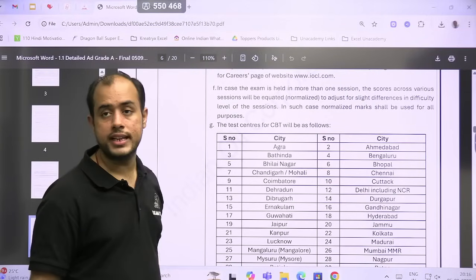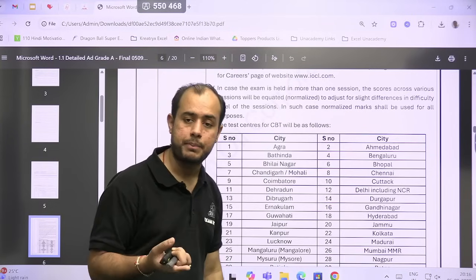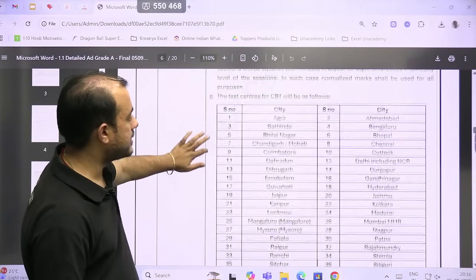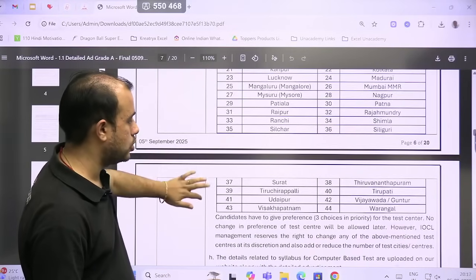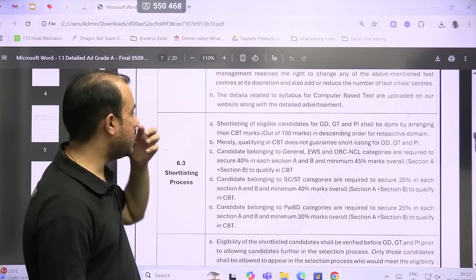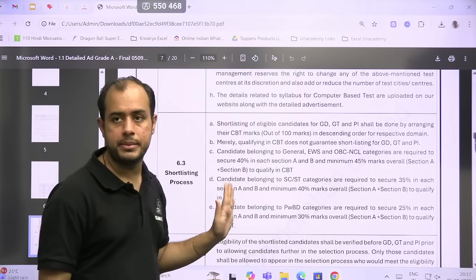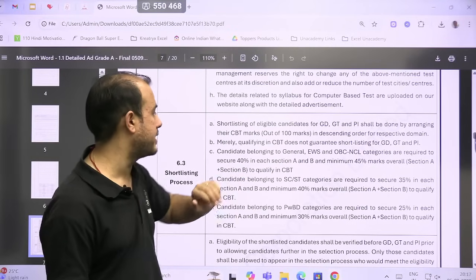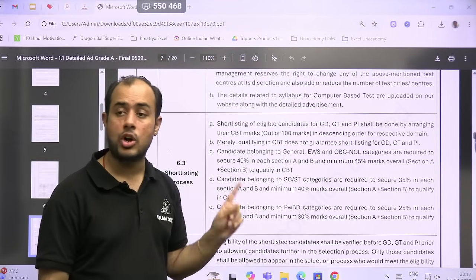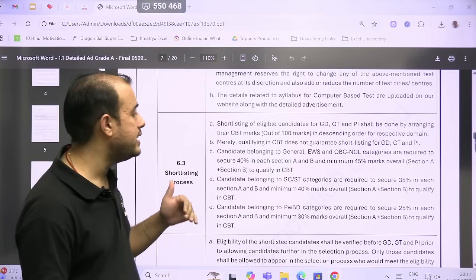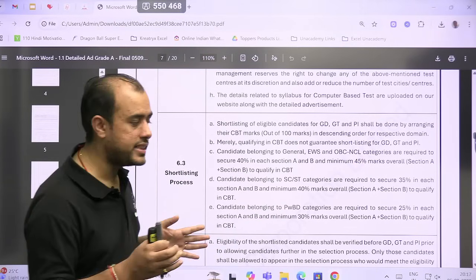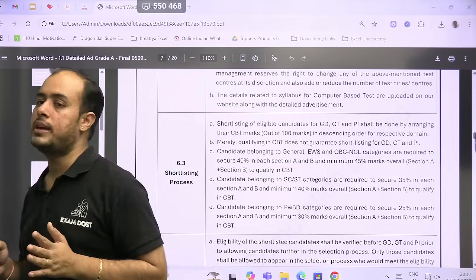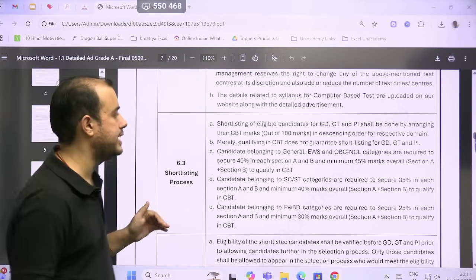So if they conduct the exam in more than one session—that is, for one branch there are multiple papers conducted—then they will resort to normalization. And these are the test centers for the CBT which you can go through; 44 centers have been mentioned. Then, shortlisting will be done by arranging your CBT marks out of 100 marks in descending order for your domain—that is, separate lists for chemical, electrical, instrumentation. Merely just qualifying CBT does not guarantee you a call for GD, GT, PI. You should be in the merit list—suppose they have 50 vacancies and they decide to call in a 4-is-to-1 ratio for interview, then you should be in the top 200 people to get a call for interview.